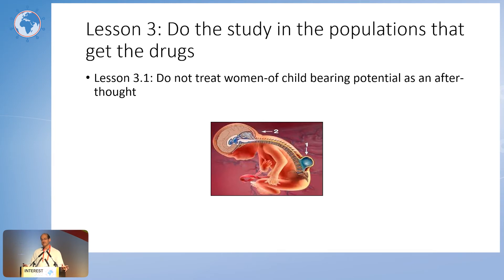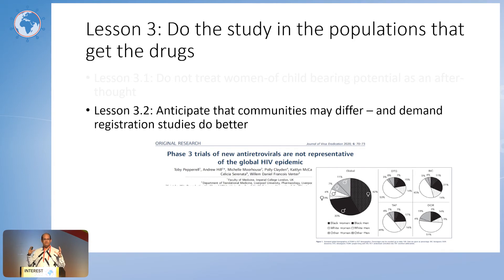Lesson 3: do the studies in the population that's going to get the drugs — that means in Africans, and particularly in African women. Find out about pregnancy and PMTCT. The problem with many of these studies is they get done in gay white men in North America, still to this day, and you don't see the toxicities we need to see. Andrew Hill showed that even within North America, studies aren't representative for drugs like dolutegravir and doravirine. We need to push hard for independent studies and pressure drug companies to enroll Black people and women into their studies.